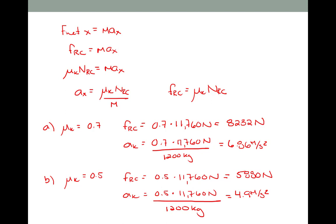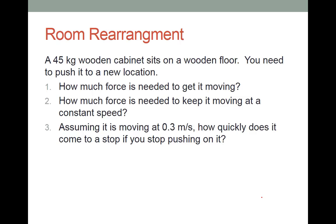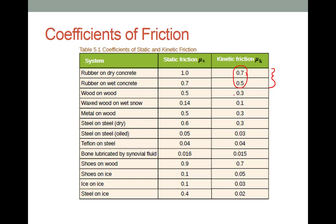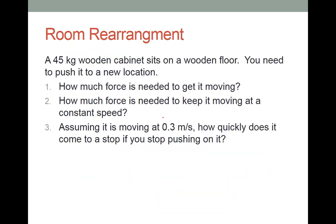This concludes our first example. Our second example involves moving a room around. We have a fairly large wooden cabinet — 45 kilograms — sitting on a wooden floor, and we need to push it to a new location. Going back to the table for wood on wood, the coefficient of static friction is 0.5 and the coefficient of kinetic friction is 0.3.